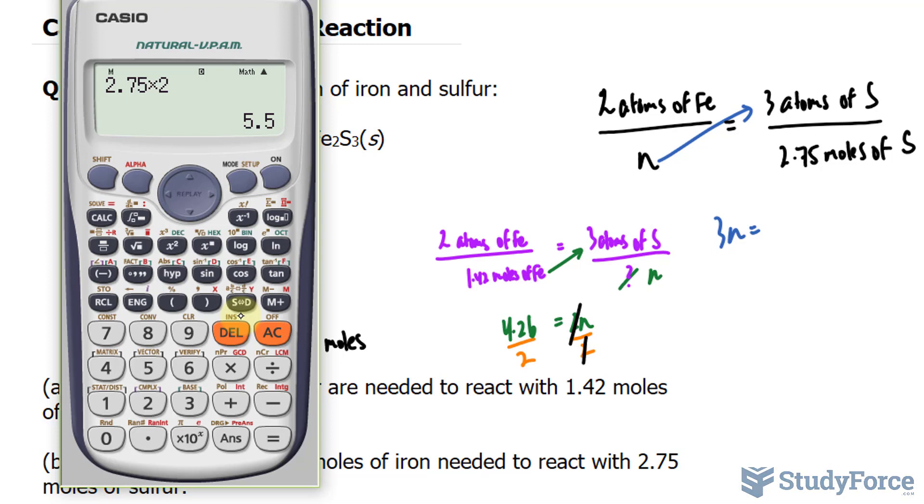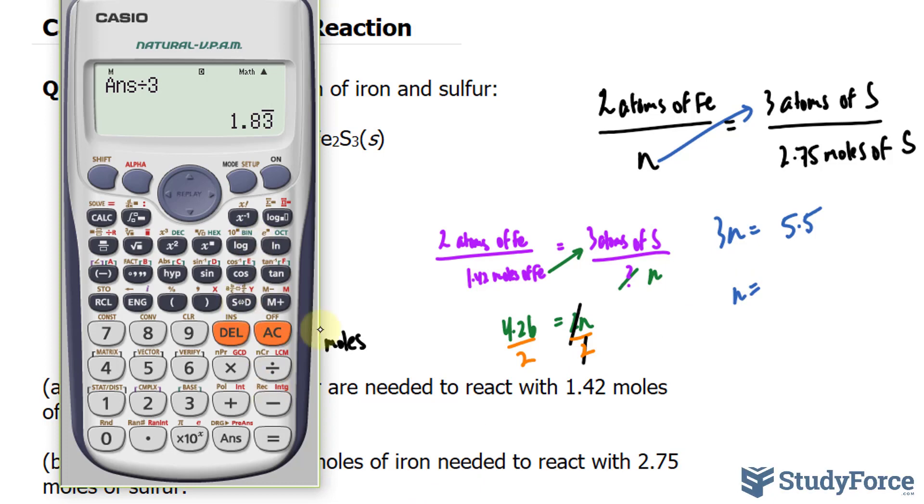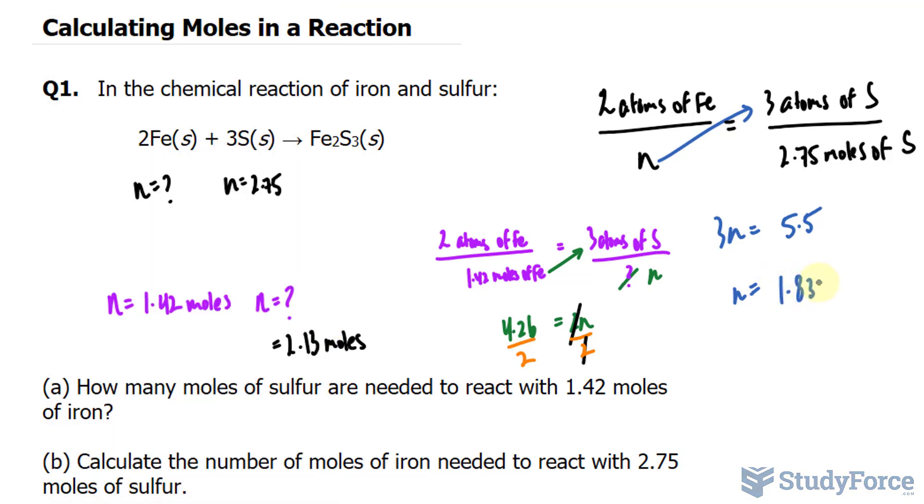As we did before, we'll divide both sides now by 3. And we end up with, let me just write this down for reference. We end up with N is equal to 1.83. We need this to three significant figures. Remember, 1.83 repeating is 1.8333 and so on. So to three significant figures, the answer would be 1.83 moles. Those are the answers to A and B.